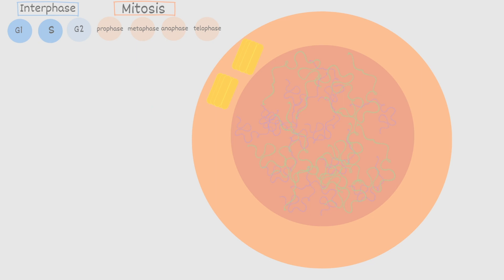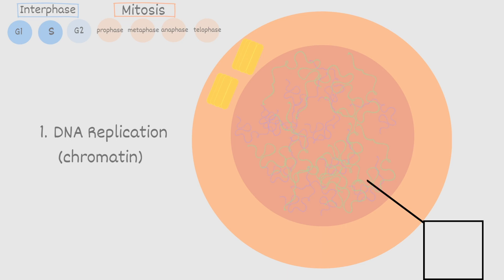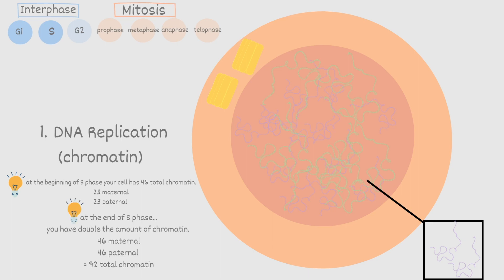After G1, the cell moves into the synthesis phase, or S phase — we are still in interphase. S phase lasts about 6 to 8 hours. The major thing that happens is DNA replication — replication of each of the chromatin. Every single chromatin duplicates itself. At the beginning of S phase your cell has 46 total chromatin: 23 maternal and 23 paternal. After DNA replication, at the end of S phase, you have double the amount — 46 maternal and 46 paternal, with a grand total of 92 chromatin. It's really important to keep track of the number of chromosomes and chromatin in each phase.